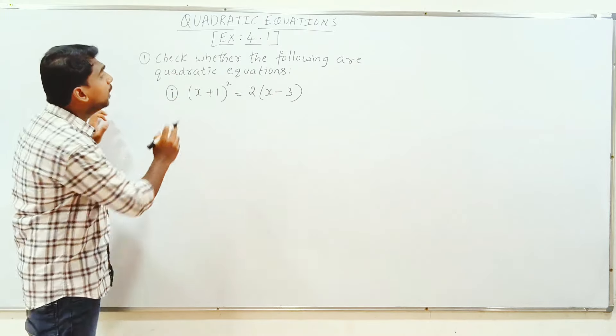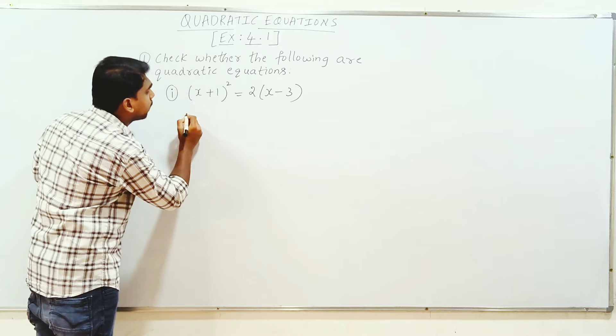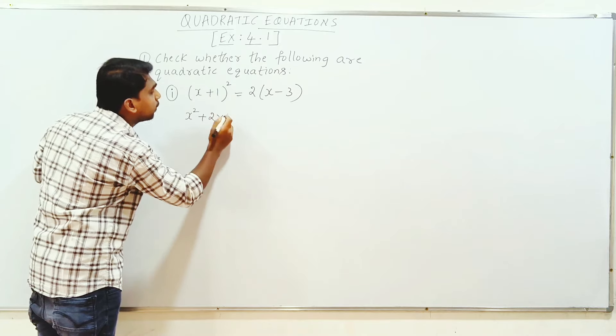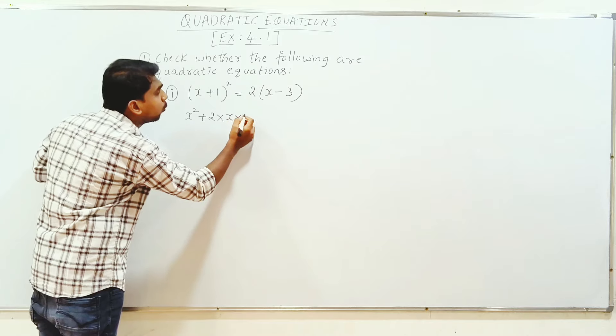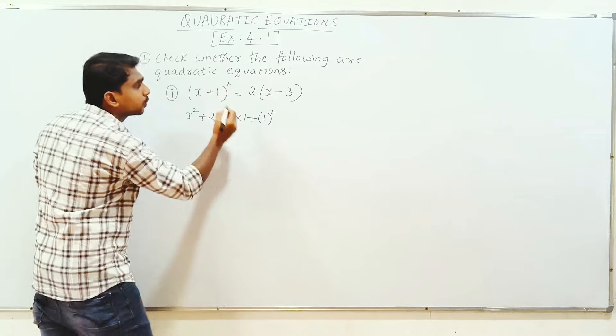What type of equation is A plus B whole square? So what is it? A square plus 2AB plus B square.